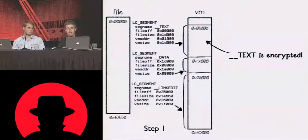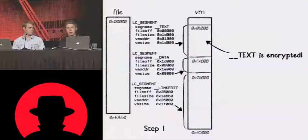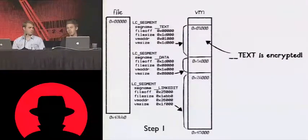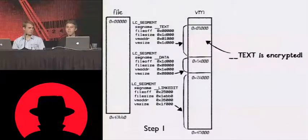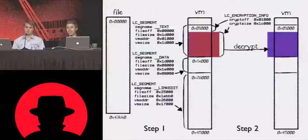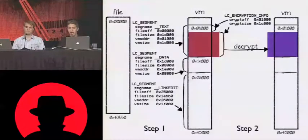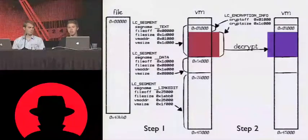It takes the segment commands and looks at the file data and the target VM addresses and just maps them over. A lot of times you may have a larger VM space than your file space — for example, if you have really large unallocated buffers. So if I'm allocating a megabyte buffer in memory, I don't have to have a megabyte of nulls in my file. It's important to note that iPhone binaries' text section is encrypted. The second pass that the Mako linker takes is to look at the LC encryption info load command, and it will actually decrypt a certain portion of the text segment and map it into memory unprotected.